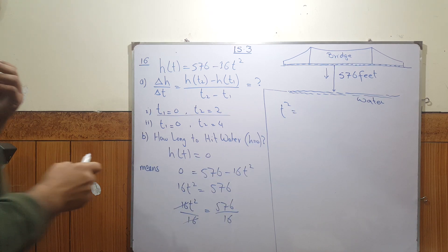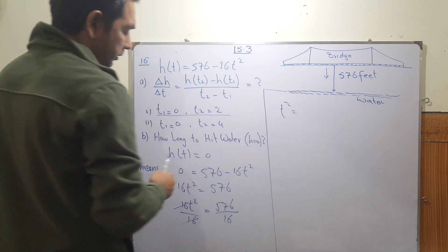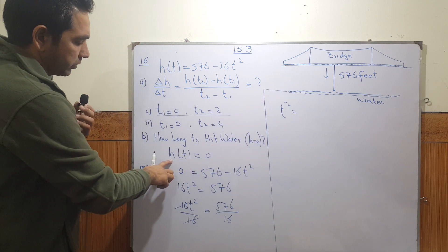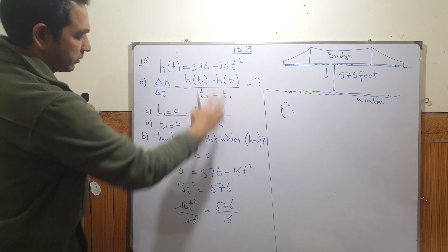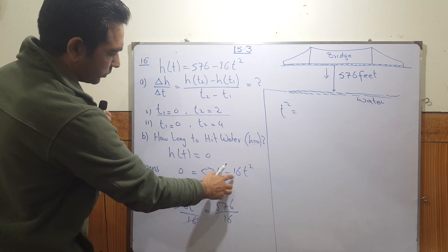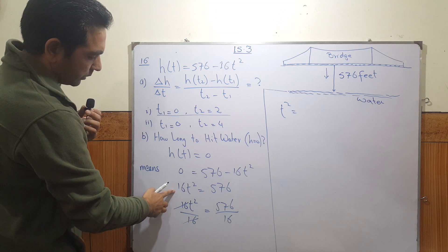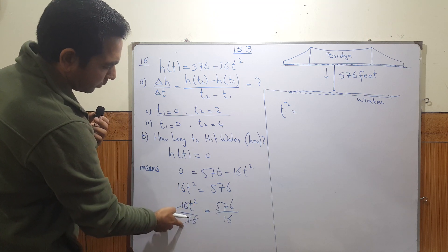So now the second part says how long will it take to hit the water. So it means the height is zero, that is h(t) equals zero. So you put here h(t) equals zero in this formula, take the minus 16t squared to the other side, and now divide both sides by 16.